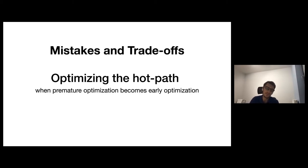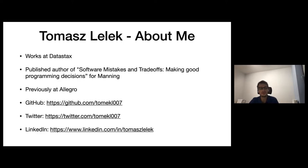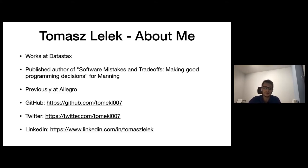Welcome to the Mistakes and Trade-offs presentation. We'll see what optimizing the hot path means and when premature optimization becomes early optimization. My name is Tomasz Lelek. I'm working at DataStax and I'm also a published author of Software Mistakes and Trade-offs: Making Good Programming Decisions for Manning. All chapters in the book are completed — it's at the end of the process. Previously I worked at Allegro Group. You can find me on GitHub, Twitter, and LinkedIn. Currently I'm working on the Stargate.io project at DataStax.